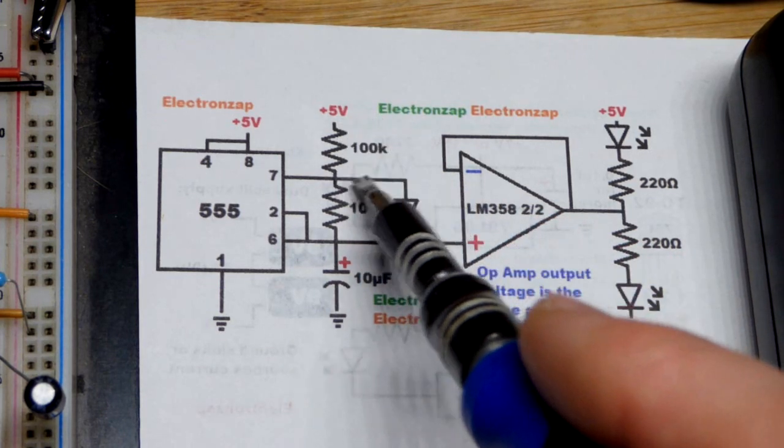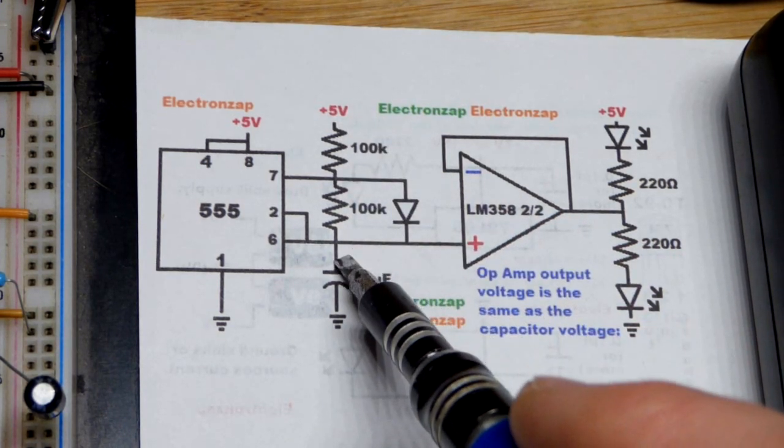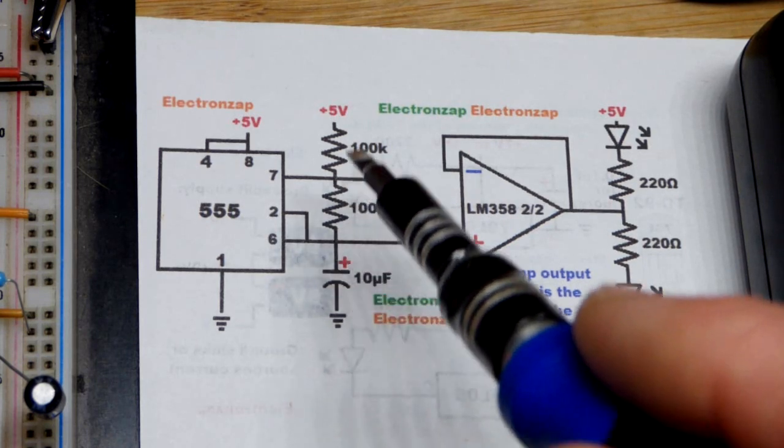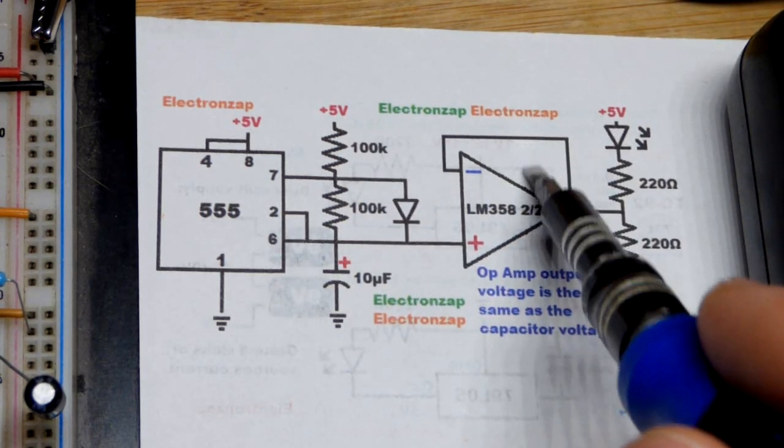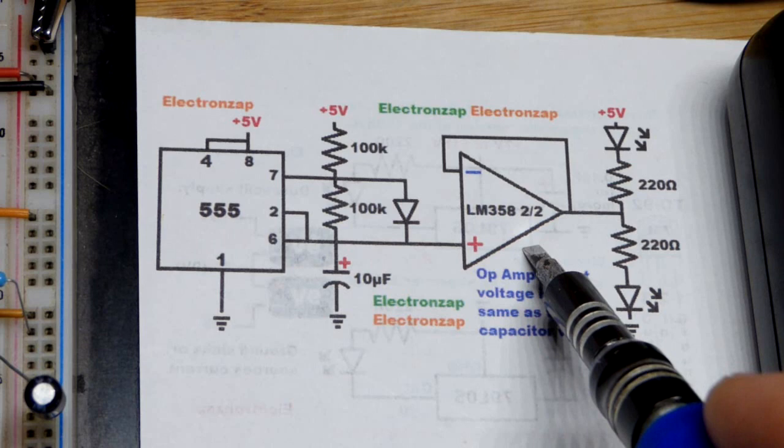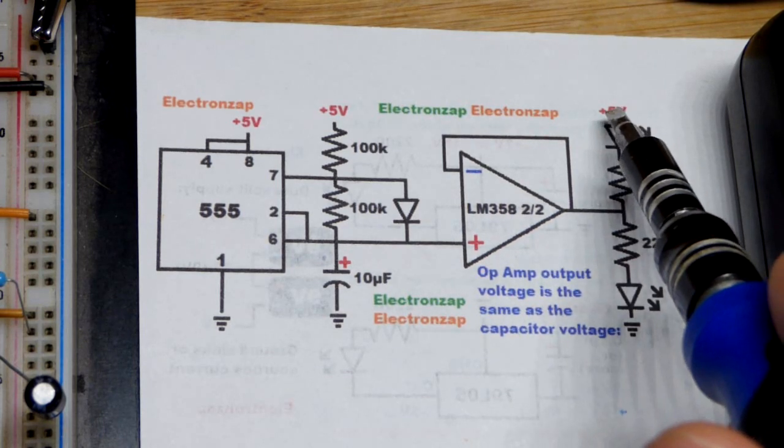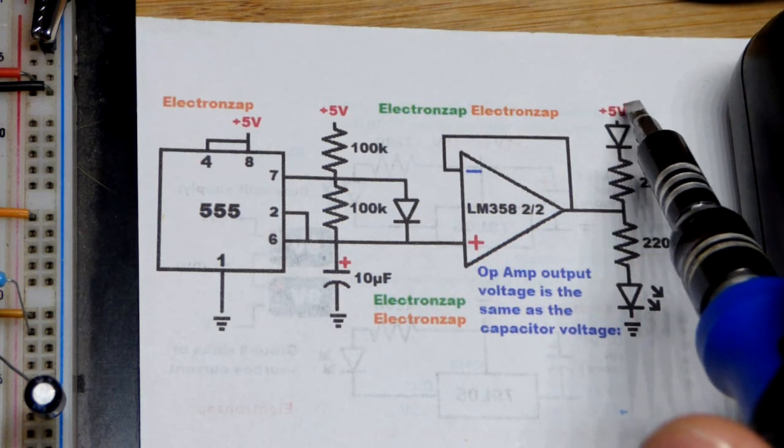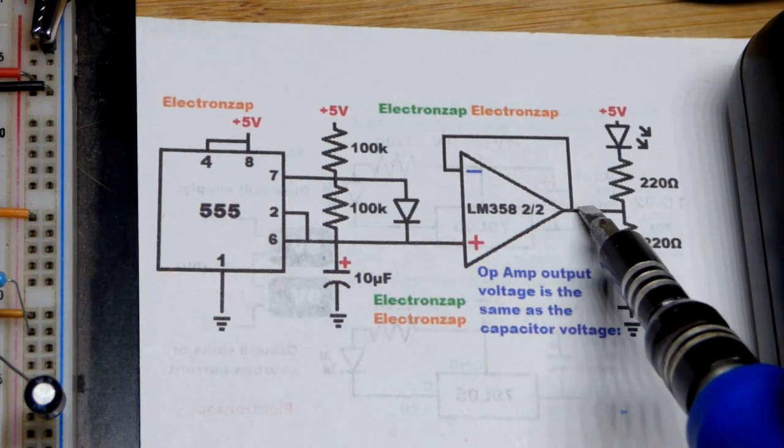The capacitor, as we said before, it charges half the time up to 2/3 of the supply voltage, so the voltage is rising. At that point you get probably like 4 volts because you don't get the full 5 volts out of the output.